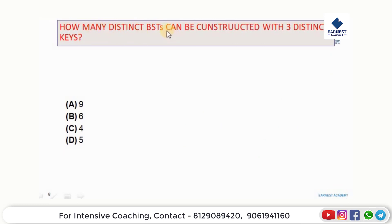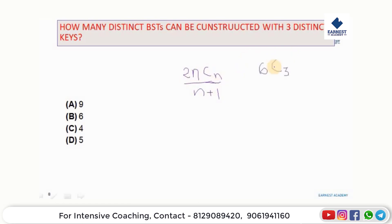How many distinct binary search trees can be constructed with three distinct keys? The number of distinct BSTs with N keys is given by the Catalan number formula: 2nCn divided by (n+1). For N=3, we compute 6C3 divided by 4, which equals 5. The answer is option D.